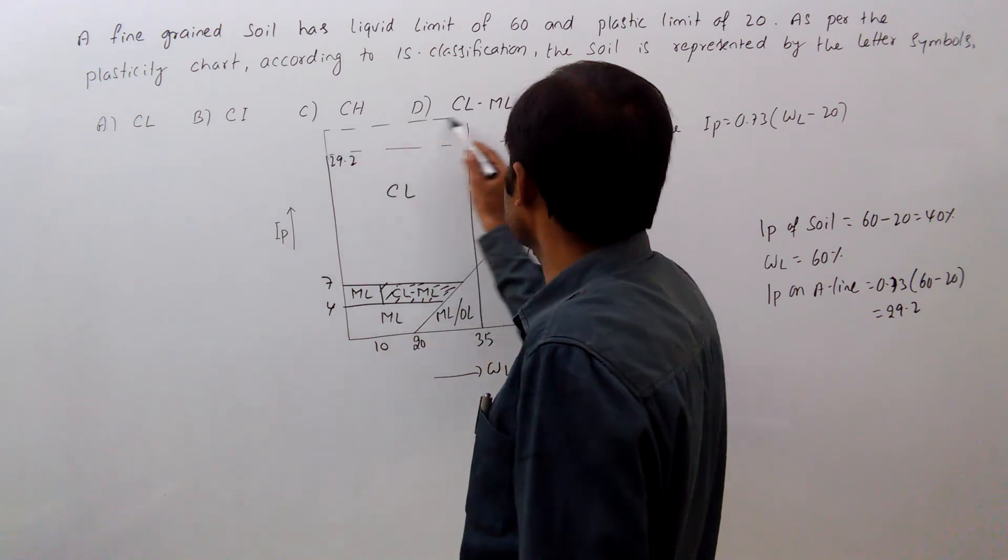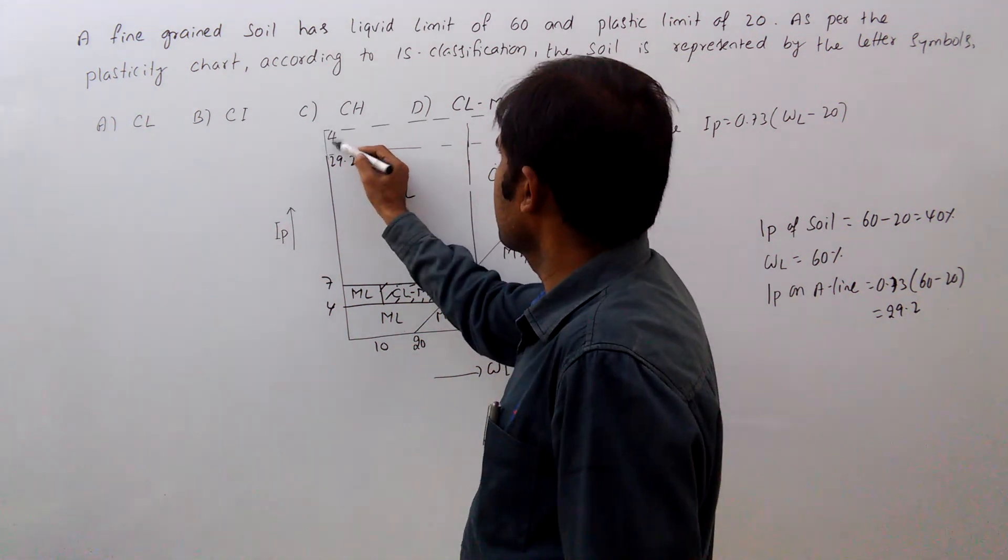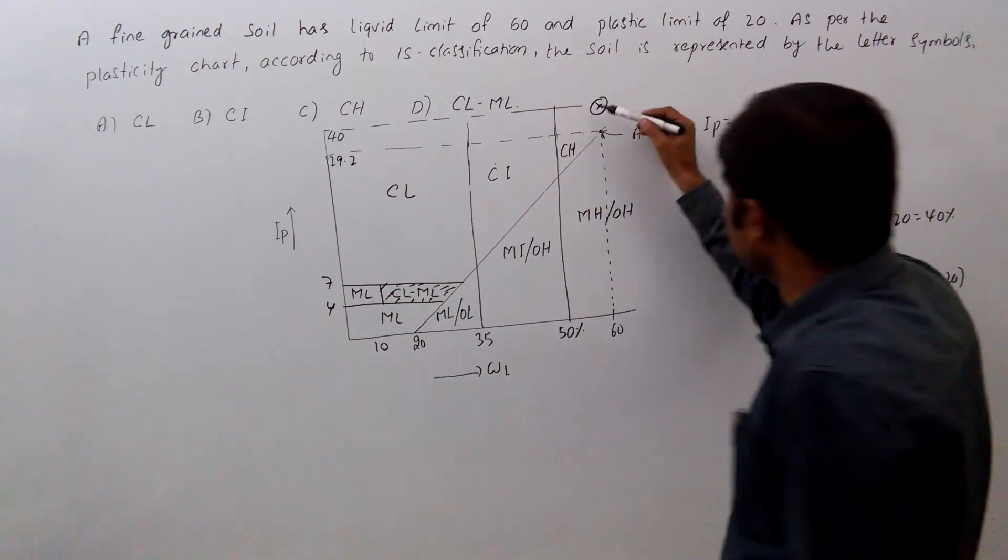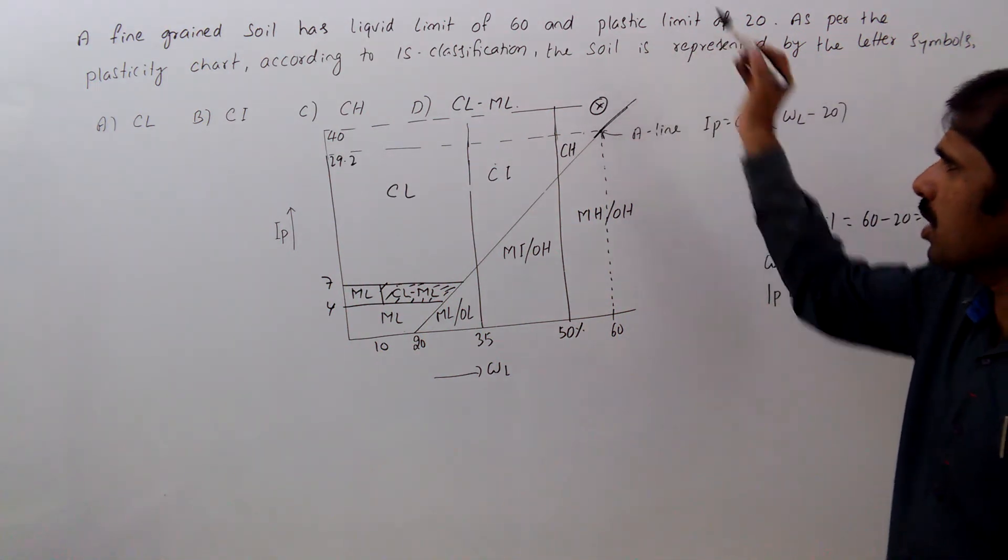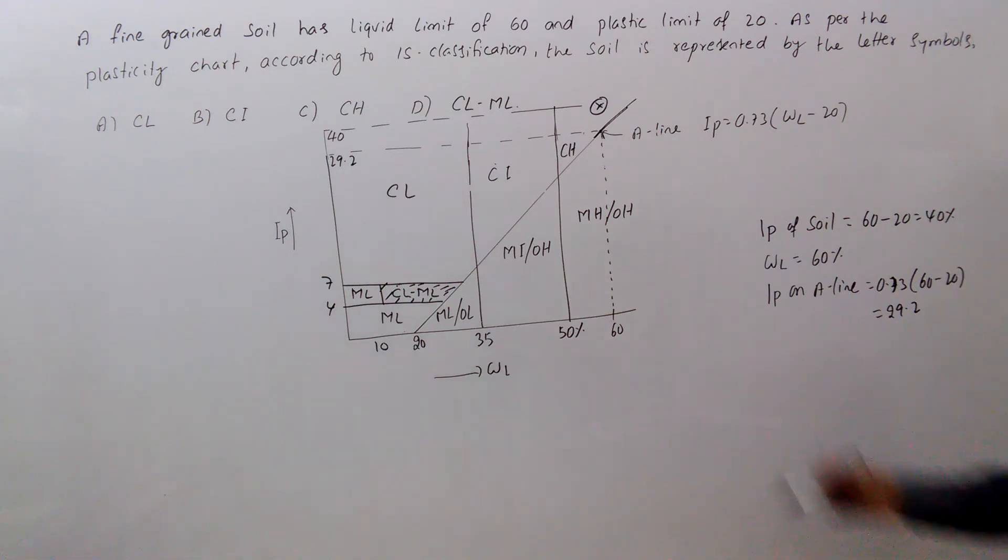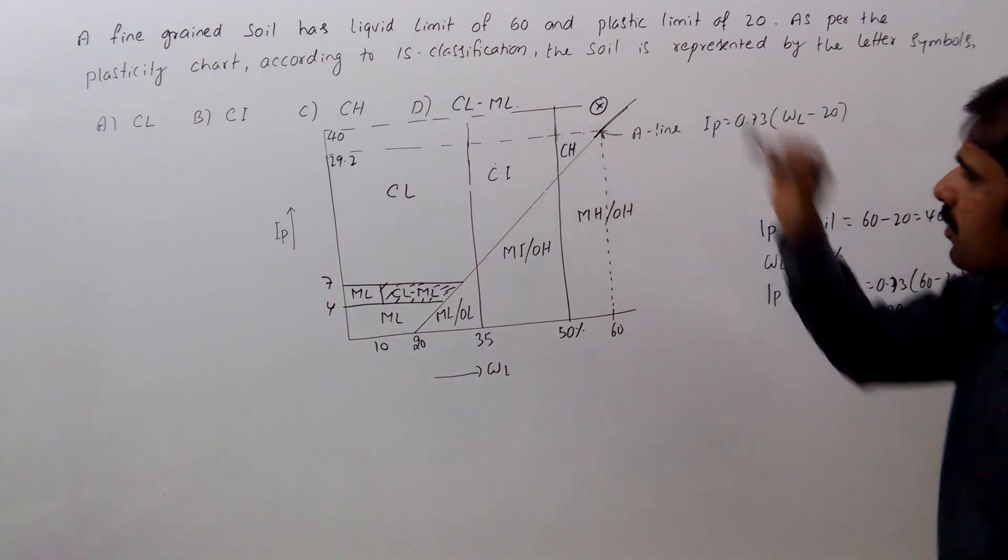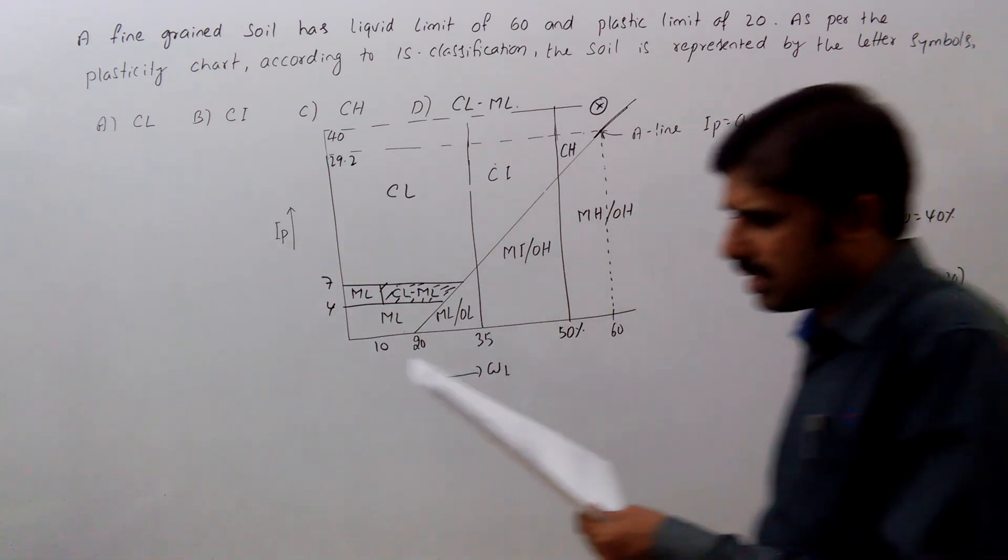So IP is 40. That means soil is lying above the A line, so it comes under category of CH.